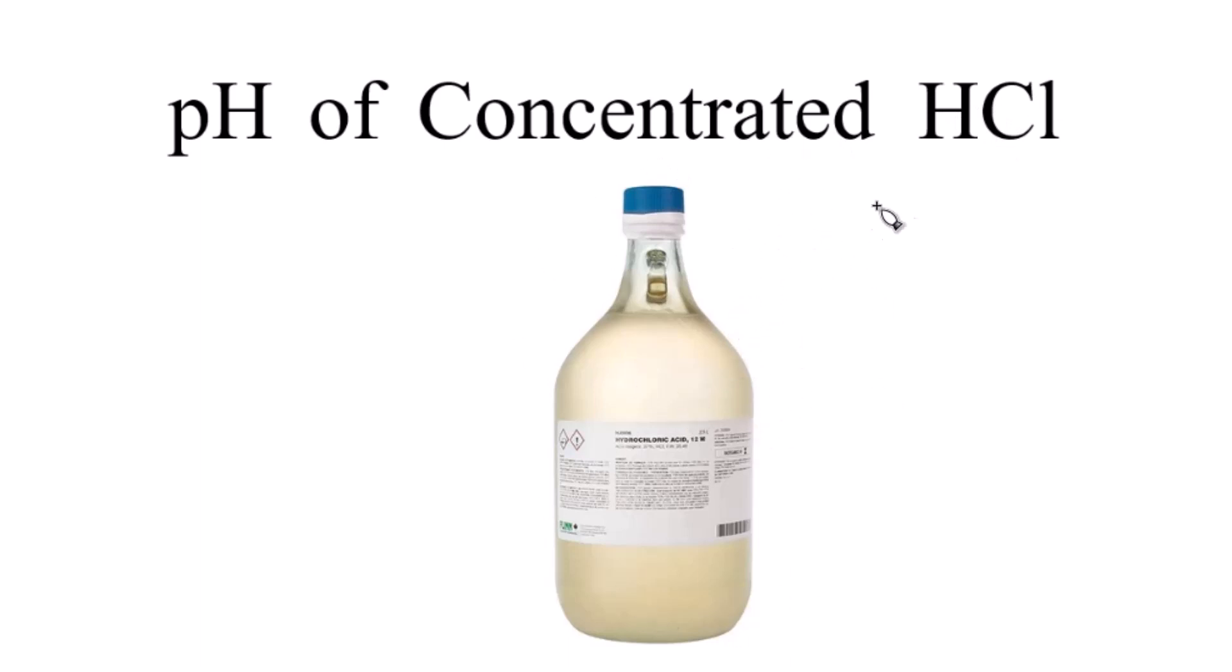So first off, hydrochloric acid is a strong acid, so it's going to dissociate completely into its ions. We'll have H plus and Cl minus. And when you buy concentrated hydrochloric acid, it's not 100% HCl. It's only actually 37% HCl. The rest is water.